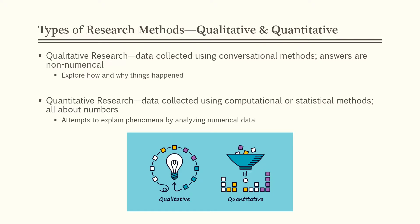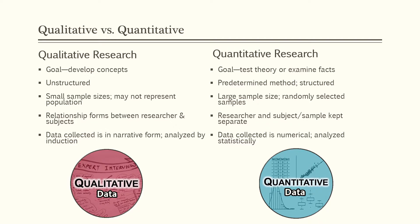Qualitative research uses conversational or non-numerical data to describe the nature of the problem being investigated. It explores how and why things happen and tends to use words, not numbers. Quantitative research, on the other hand, uses computational data or statistical methods in an attempt to explain phenomena — it's all about quantities and therefore uses numbers. The goal of qualitative research is to develop concepts or new theories; it's largely unstructured and utilizes small sample sizes that may not be representative of the population as a whole. There is a deliberate relationship formed between the researcher and subjects to build trust, and qualitative data is collected in narrative form and analyzed using inductive reasoning.